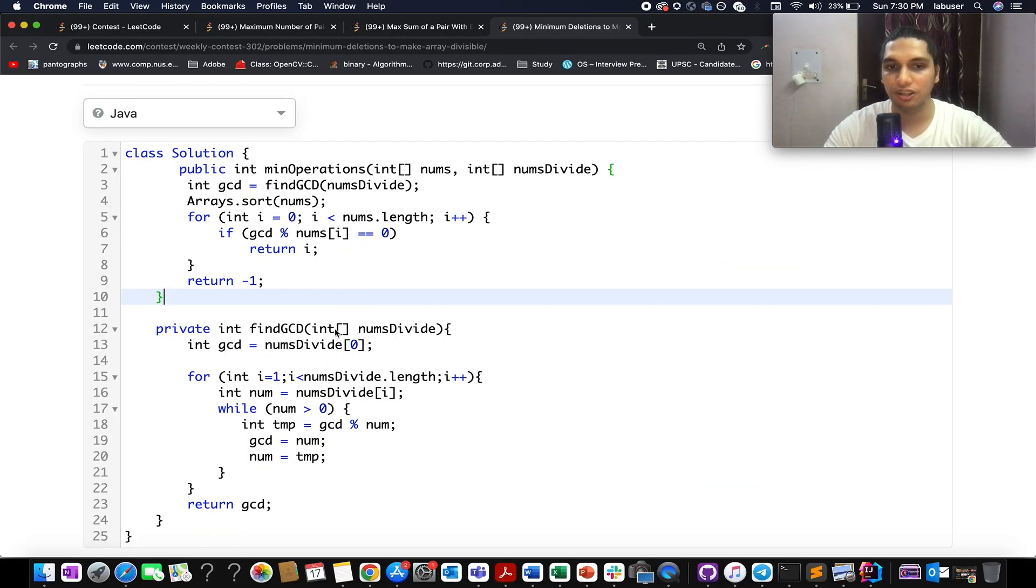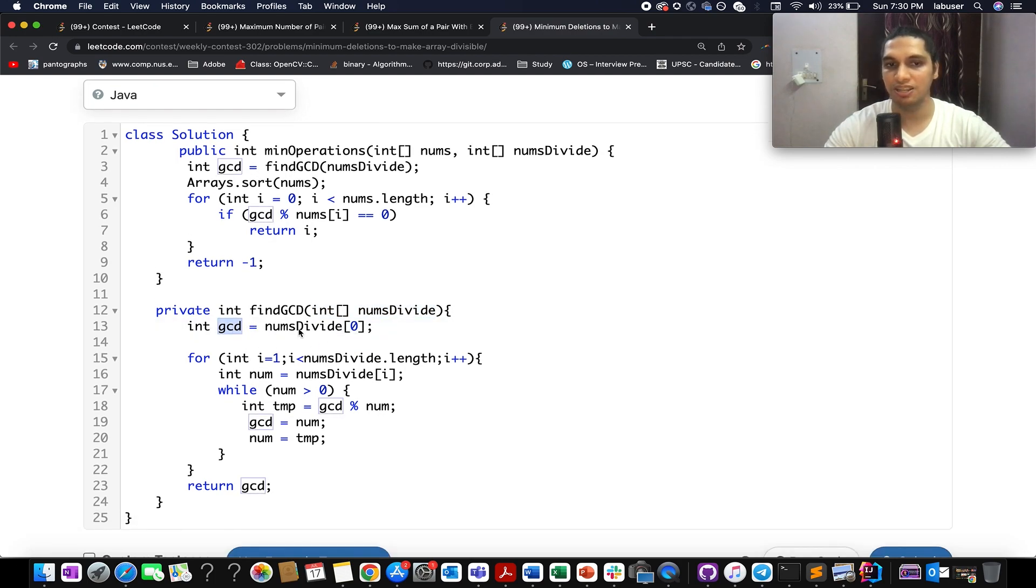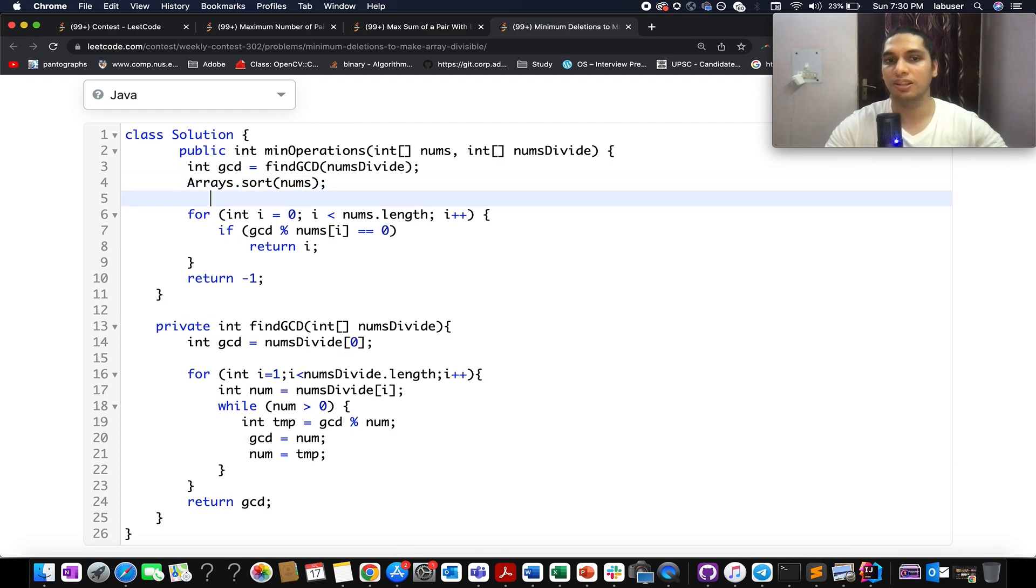So in the first go, I have created a helper method that basically identifies the GCD across the nums divide array. Here I've taken a GCD variable initialized to nums[0]. I iterate over all the elements starting from 1 up till nums divide length. And I identify the GCD that occurs across all the elements in this entire array. Once I have that GCD value, what do I do?